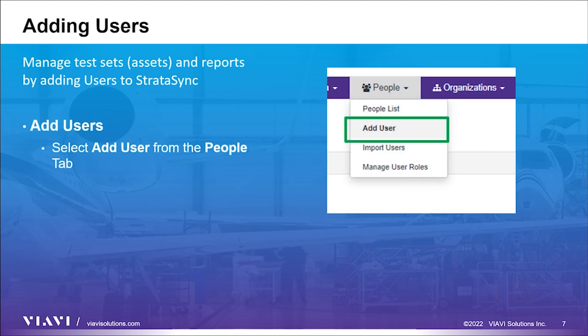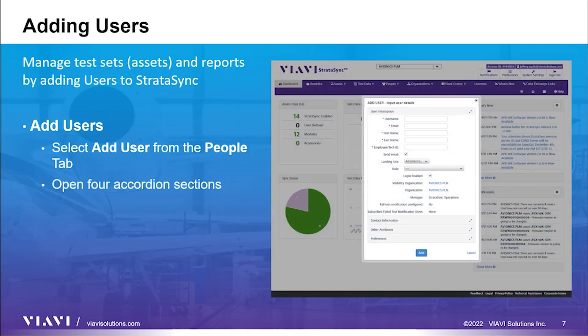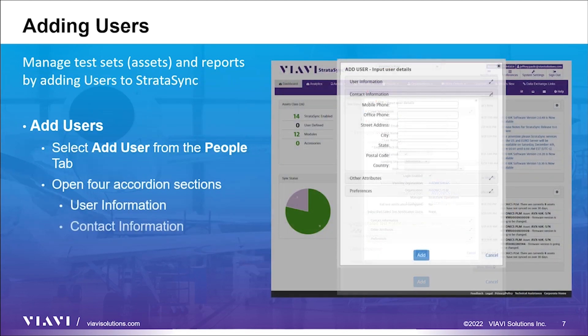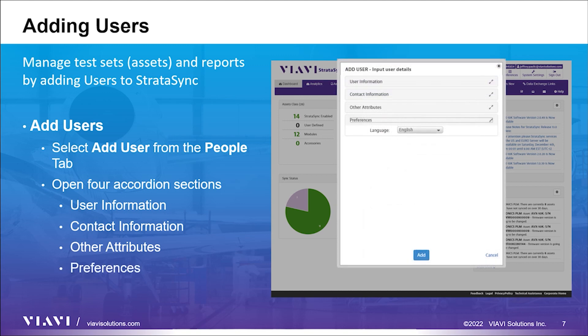More users and test sets can be added to your account so that all test results and updates can be managed. To add a new user to your account, click on the People link in the Navigation toolbar and select Add User from the drop-down. To prevent scrolling a long page, the Setup window has four segments that can be opened to enter the various user information items. Click the gray color headers for the User Information, Contact Information, Other Attributes, and Preferences. Complete the necessary information for each user and click the Add button to create a user.